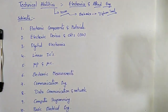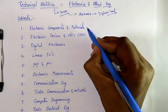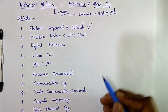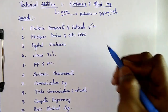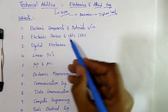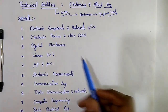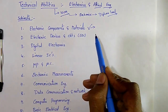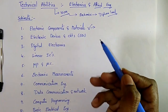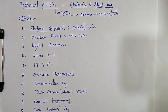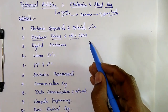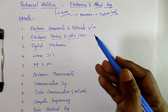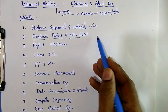Coming to the subjects under technical abilities for electronics engineering. First, electronic components and materials — subtopics include conductors, semiconductors, insulators, magnetic materials, and electronic components like switchgear, relays, and MCBs. Second, electronic devices and circuits — very important for RRB JE exam. It covers diodes, transistors, oscillators, amplifiers, rectifiers, inverters, and multivibrators.